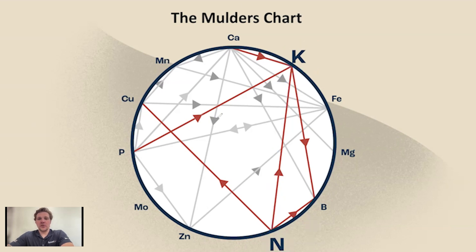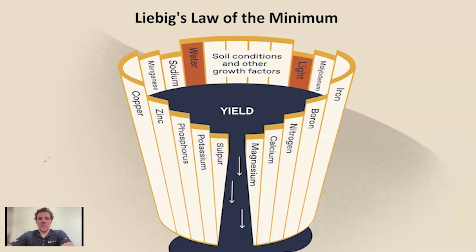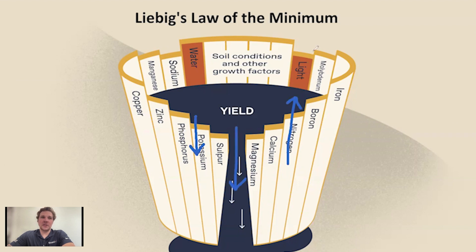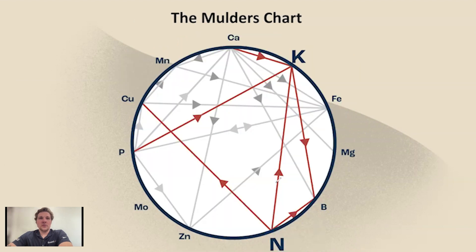So what does Mulder's chart have to do with Liebig's Law? If we go back to the barrel, we might think that by increasing nitrogen and making that stave higher, we're actually increasing our potential. But actually the opposite is happening — by making the stave on the nitrogen higher, we're actually shortening the stave on potassium. So by creating that potassium deficiency, we're decreasing potential yield. The takeaway from Mulder's chart is that more is not always better. Because nutrients have complex relationships, more can sometimes mean your plant is getting limited elsewhere.